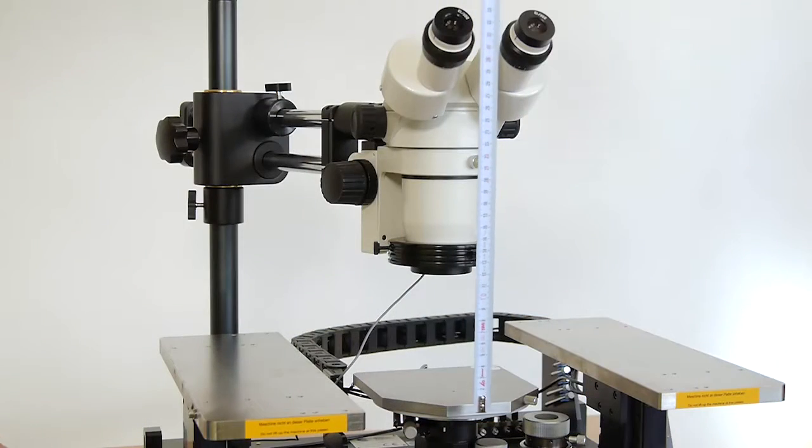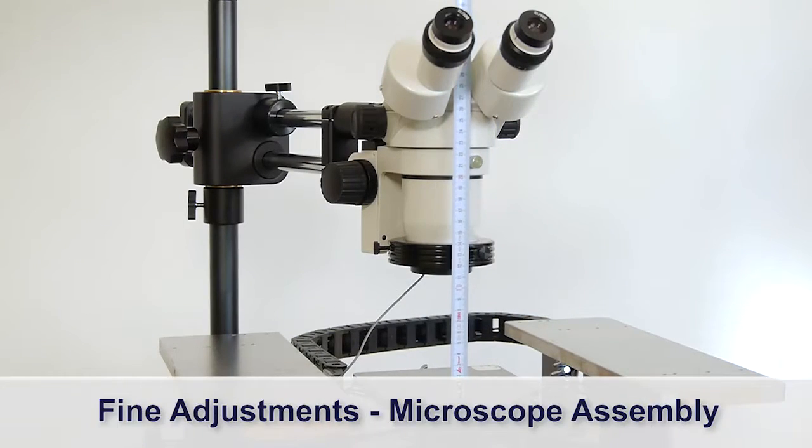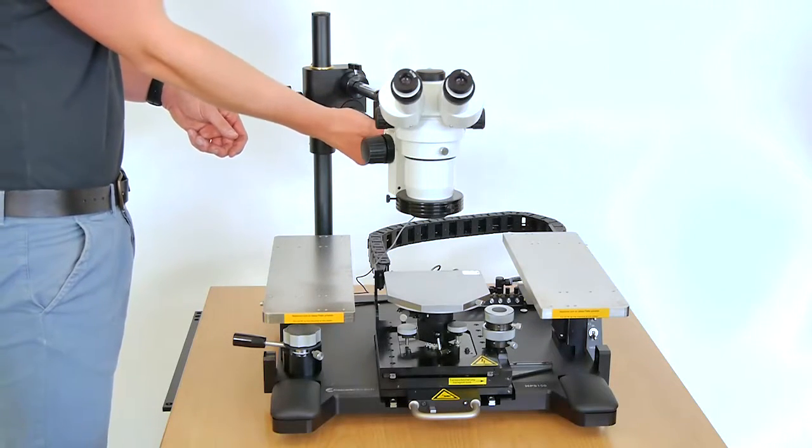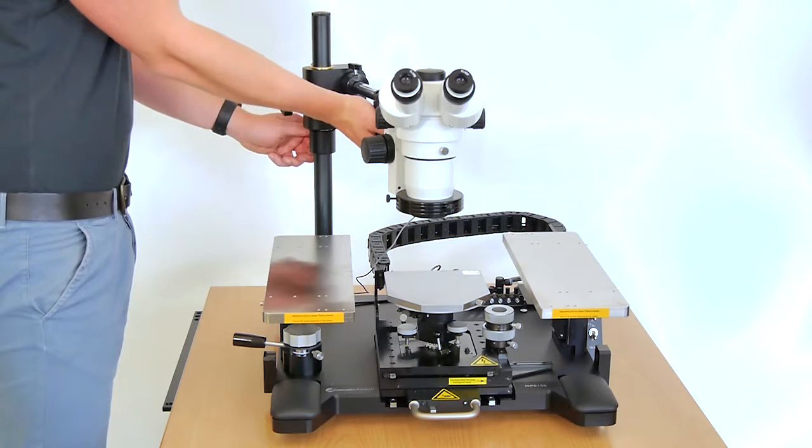If necessary, re-adjust the set height of the microscope. The recommended working distance is 113mm. For this, secure the crossarm at first with your hand and then unlock and adjust the clamping collar.